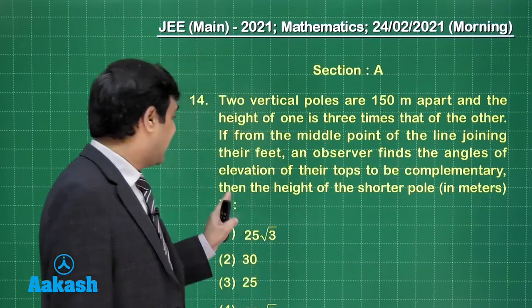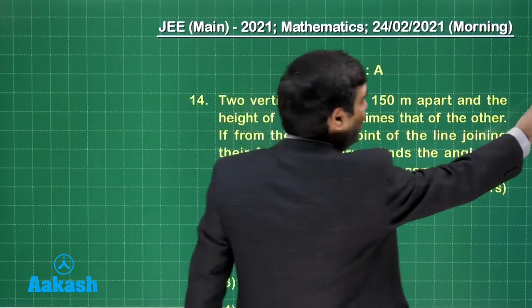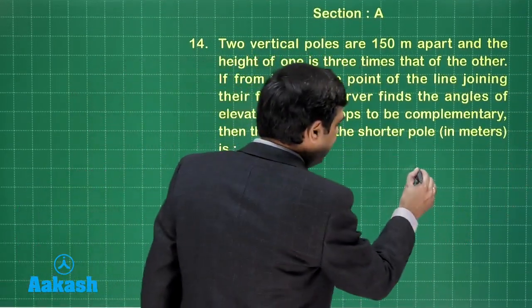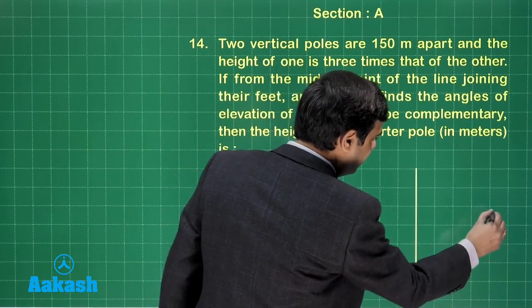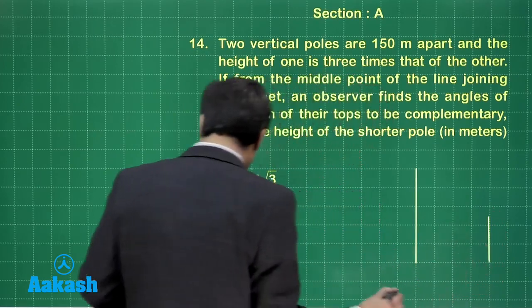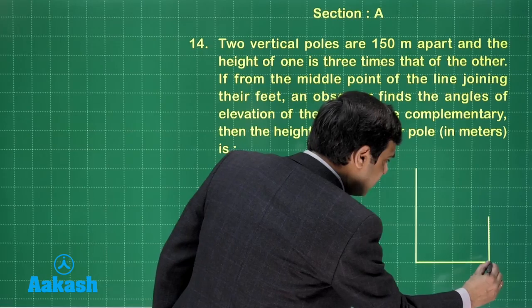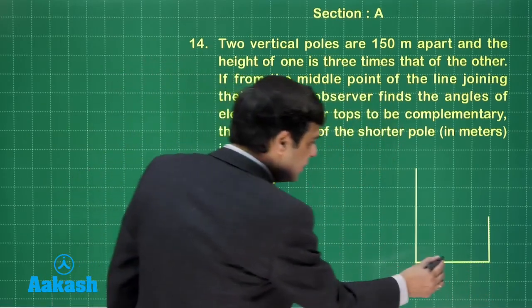Clear? Then the height of the shorter pole - seems to be pretty simple from the height and distance segment. Let's try. We have one pole and another one, correct. Now when you join the base of the two, this is 150 meters. From the middle, what is the question talking about?